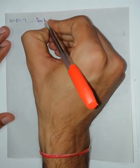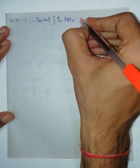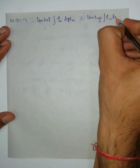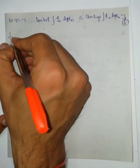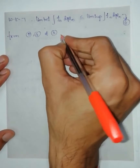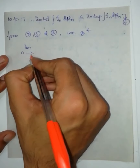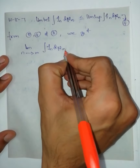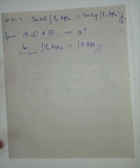We know that lim inf ∫f_n dμ_n ≤ lim sup ∫f_n dμ_n — call this equation number 4. Therefore, combining equations 2, 4, and 3, we get: lim_{n→∞} ∫f_n dμ_n = ∫f dμ. This completes the proof of the theorem.